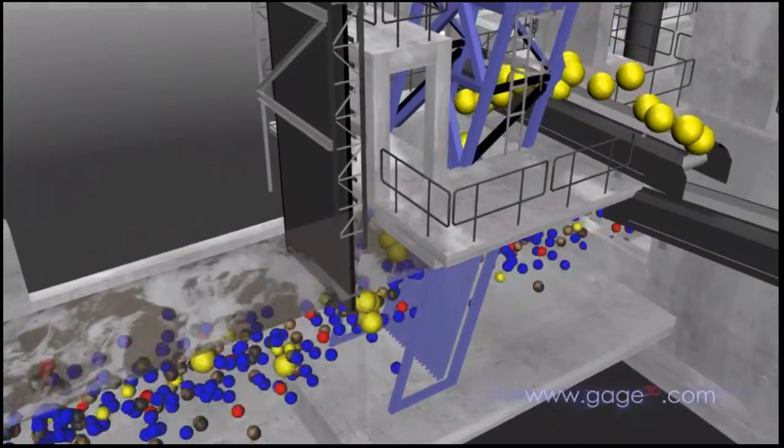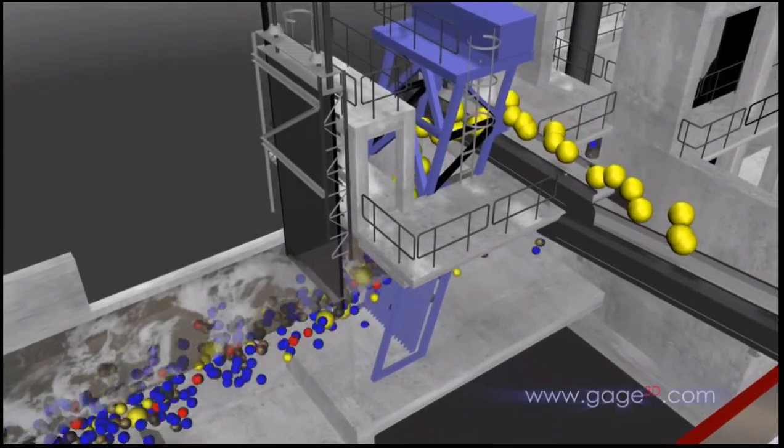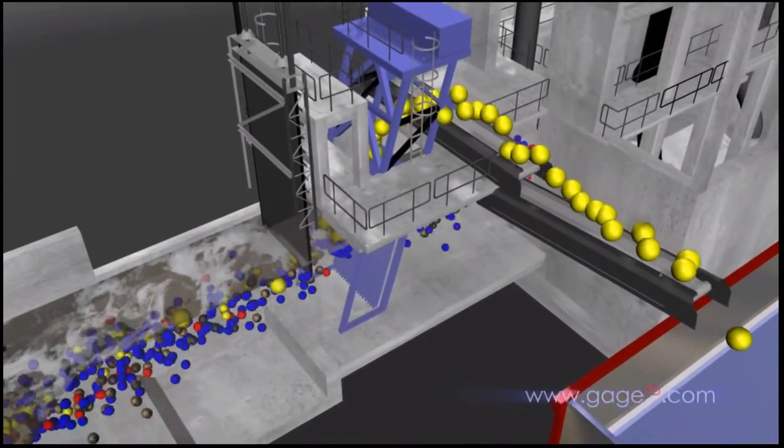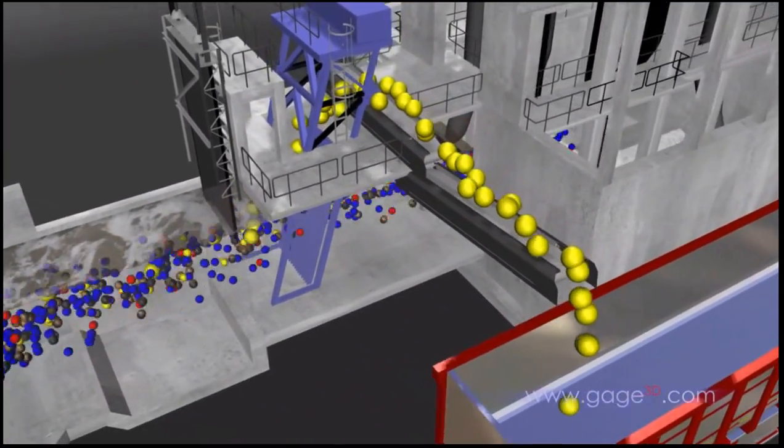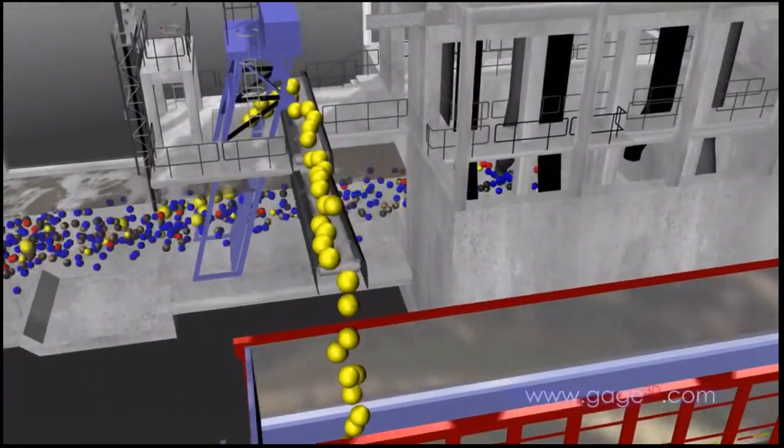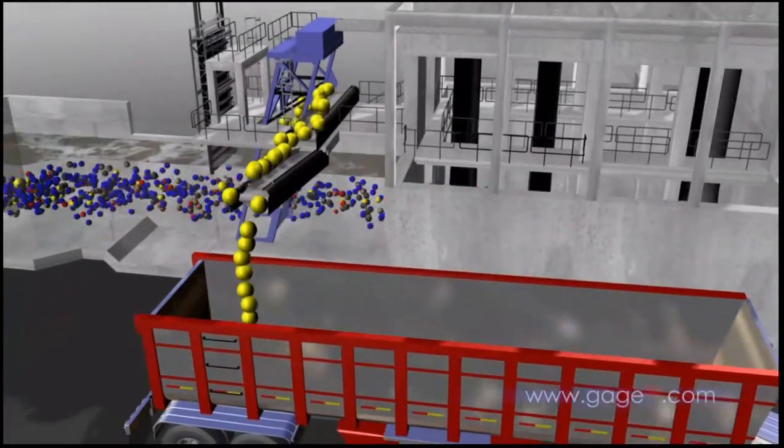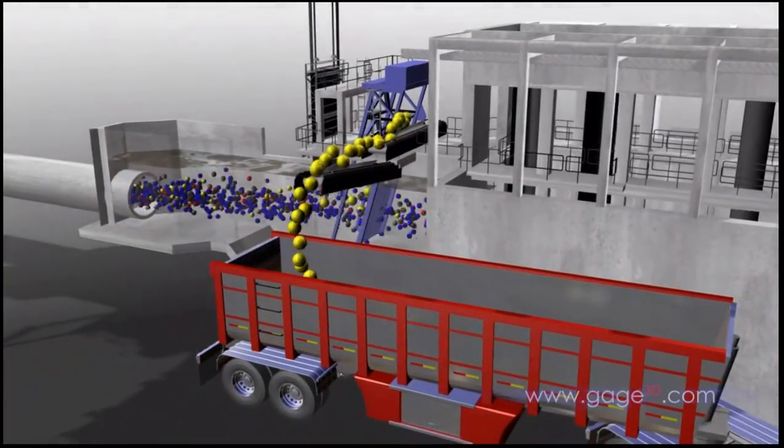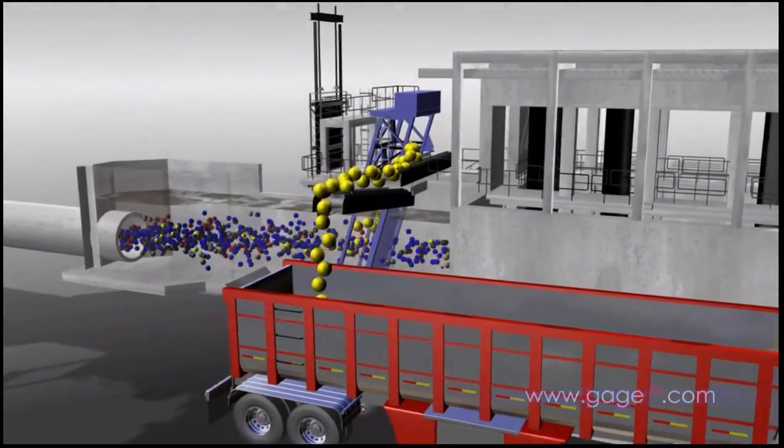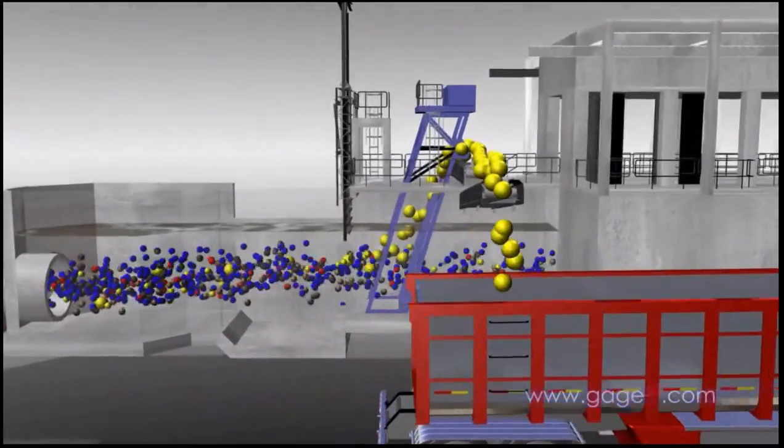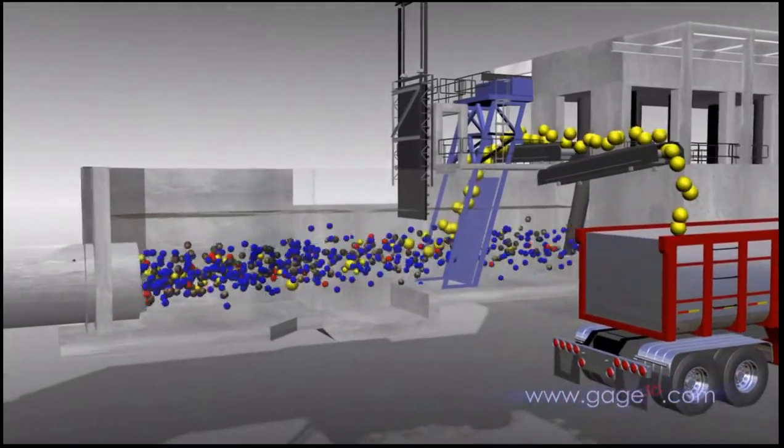The first part of the treatment process is called the headworks. Influent screens filter out large debris like rags, cans, and other trash, represented by the yellow spheres. The removal of large debris helps keep pumps and pipes within the plant from getting clogged. The trash removed from the screens is collected and disposed of at a landfill.